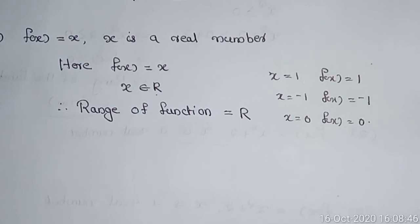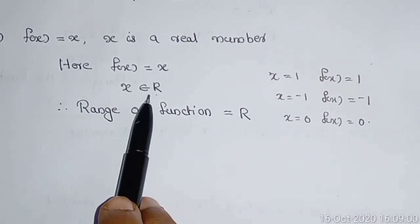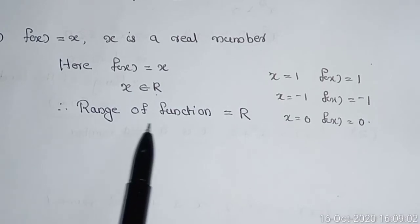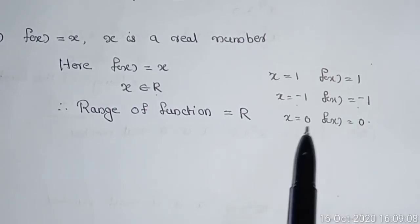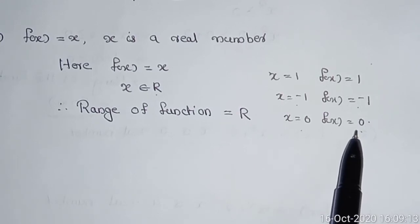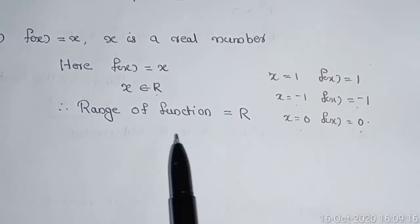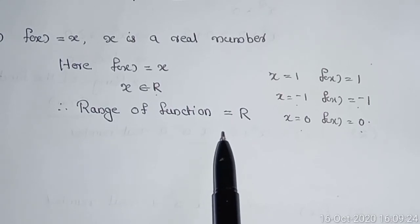Third: f(x) = x, where x is a real number, so the domain is all real numbers. This is an identity function. For any value of x, f(x) takes the same value. For example, x = 1 gives f(x) = 1; x = −1 gives f(x) = −1; x = 0 gives f(x) = 0. Therefore the range of the identity function f(x) = x is R.